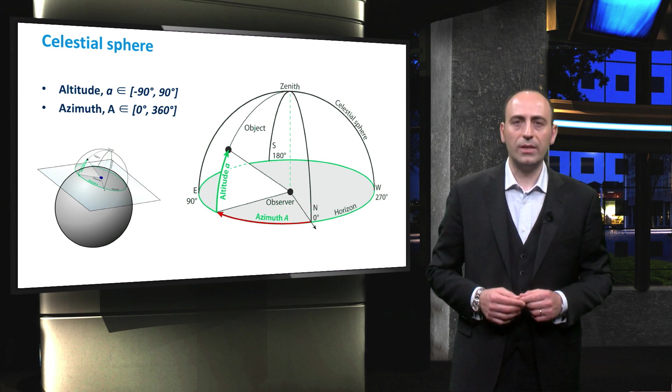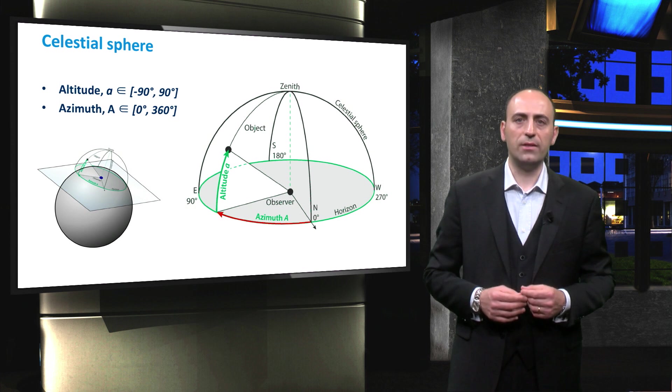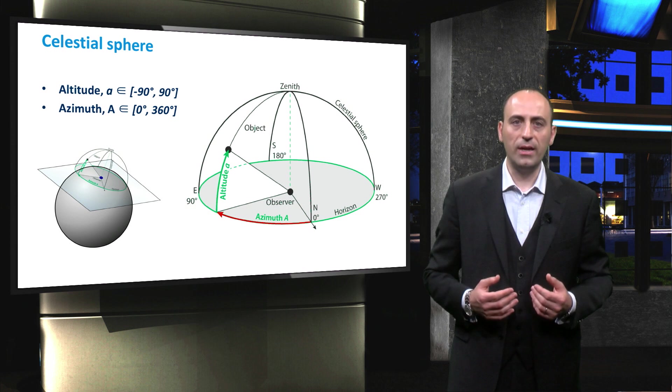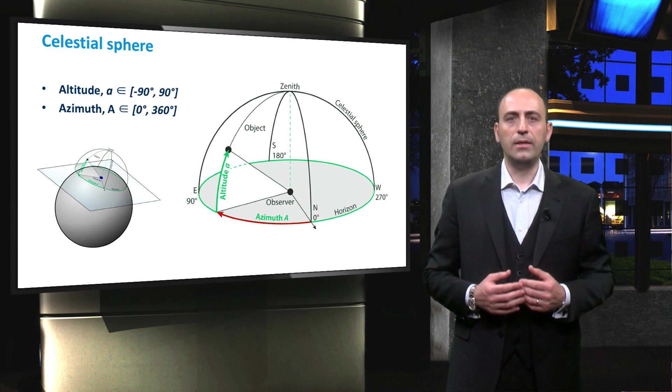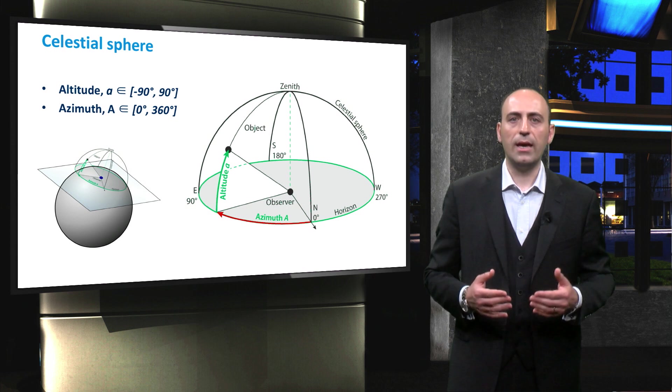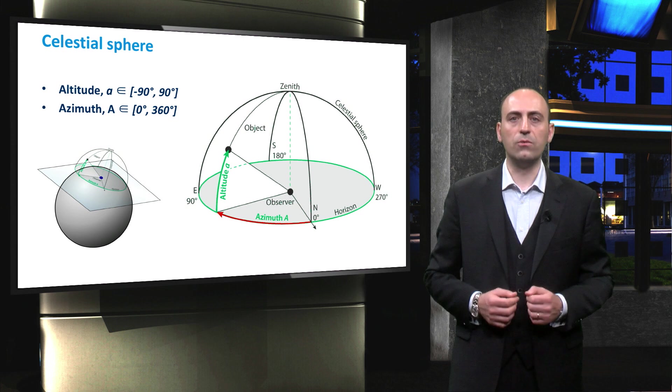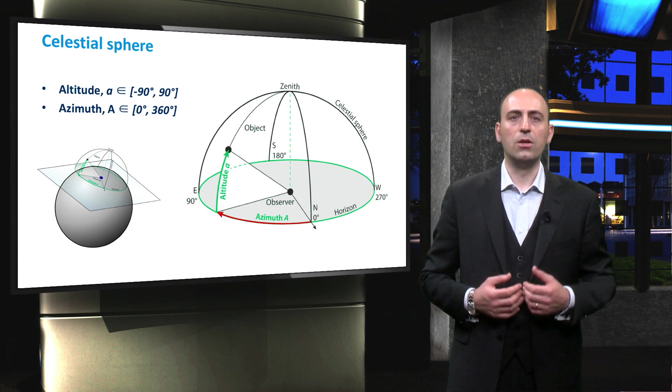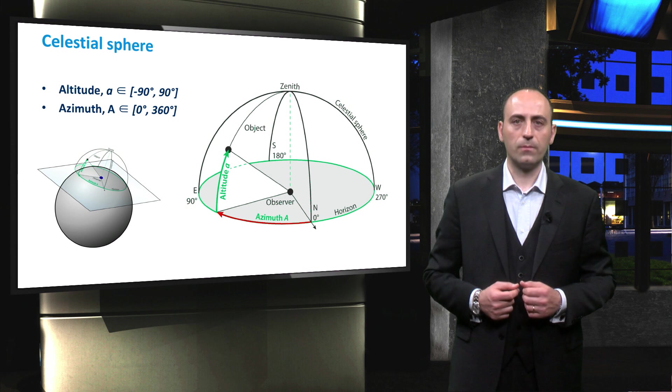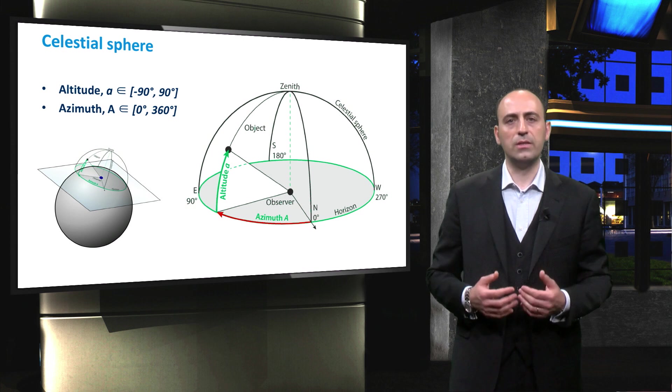The azimuth A, capital, is the angle between the line of sight projected on the horizontal plane and the north. It is counted eastward, such that north has an azimuth of 0 degrees, east of 90 degrees, south of 180 degrees, and finally west to 270 degrees. Its angular range is those between 0 and 360 degrees.